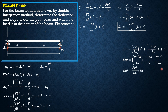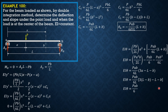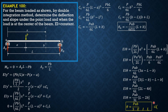Factoring out PAB over 6L gives the quantity 3A minus L minus B. Replacing A by L minus B: EI theta equals PAB over 6L times the quantity 3 times L minus B minus L minus B. Simplifying: 3L minus L gives 2L, and negative 3B minus B gives negative 4B, so EI theta equals PAB over 6L times the quantity 2L minus 4B. Factoring out 2, theta under the load equals PAB over 3EIL times the quantity L minus 2B.